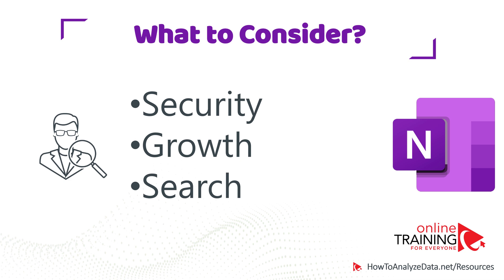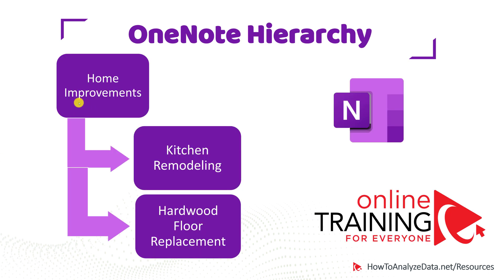The second important consideration is future growth. Would you be able to add necessary categories to your OneNote notebook? For example, if you created a notebook called Home Improvements, you can have sections like kitchen remodeling and hardwood floor replacement. But would you be able to add your student lecture notes, your to-do lists, or non-home improvement projects into that notebook? This is something to consider when organizing the data.